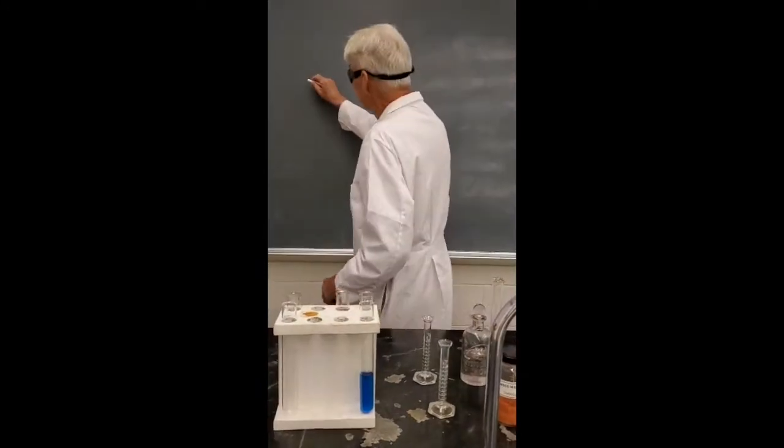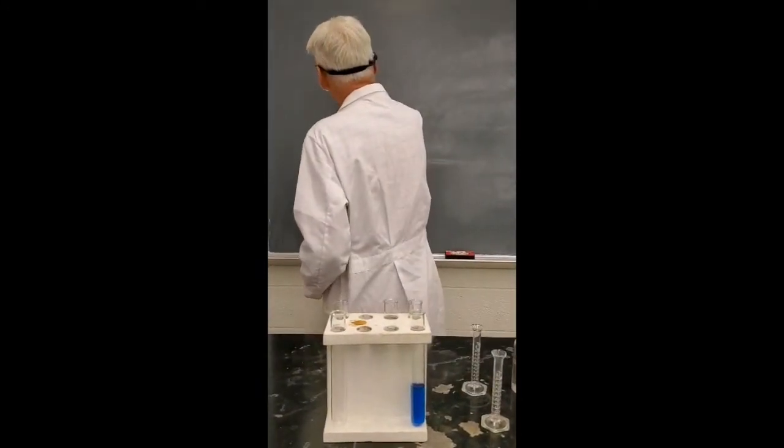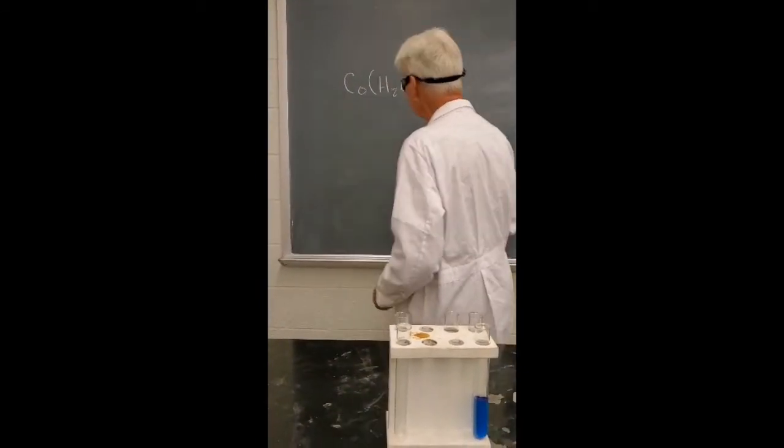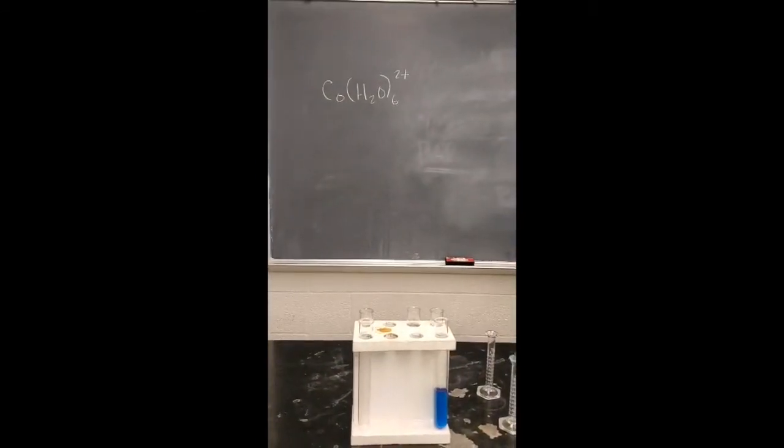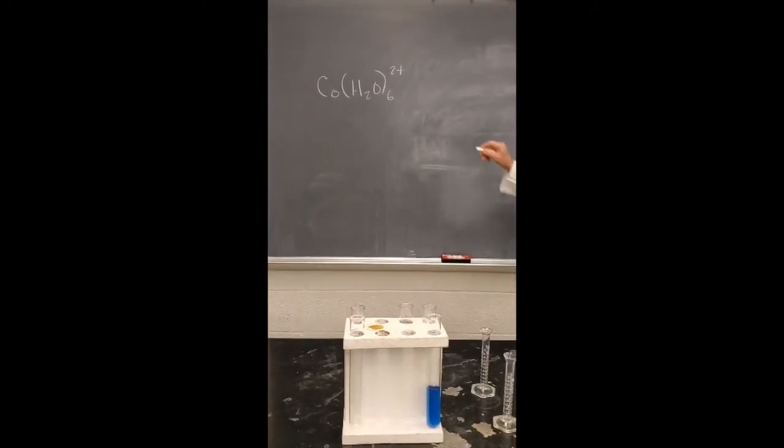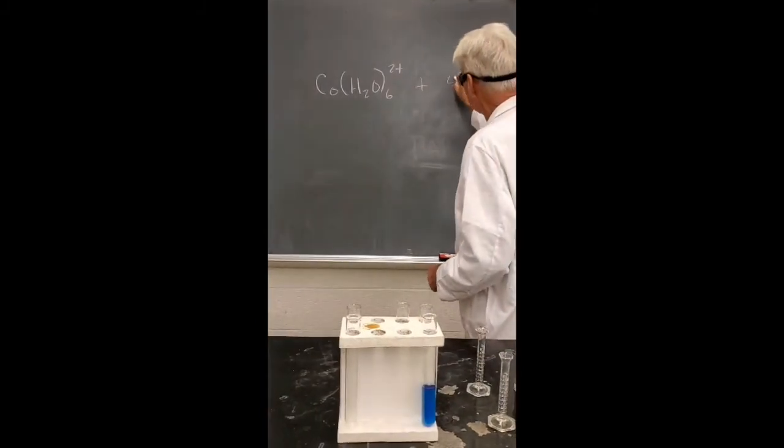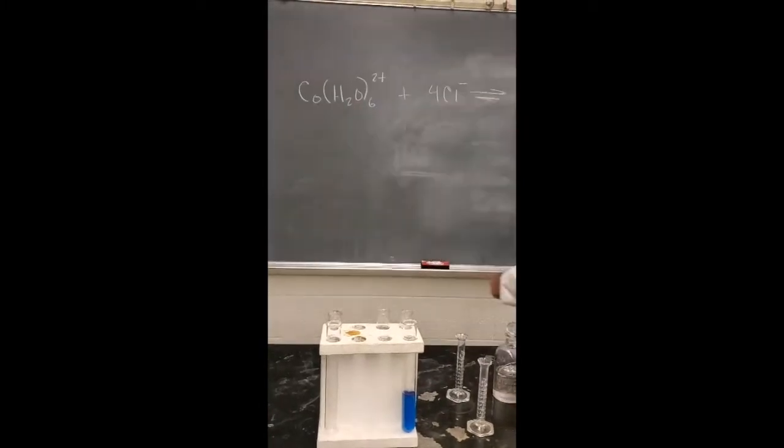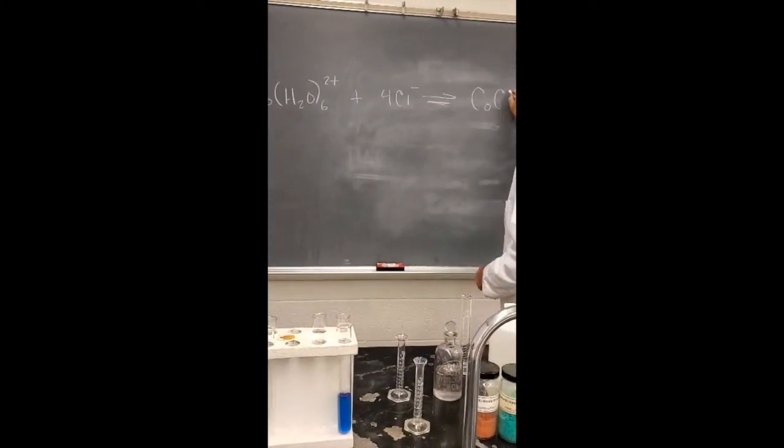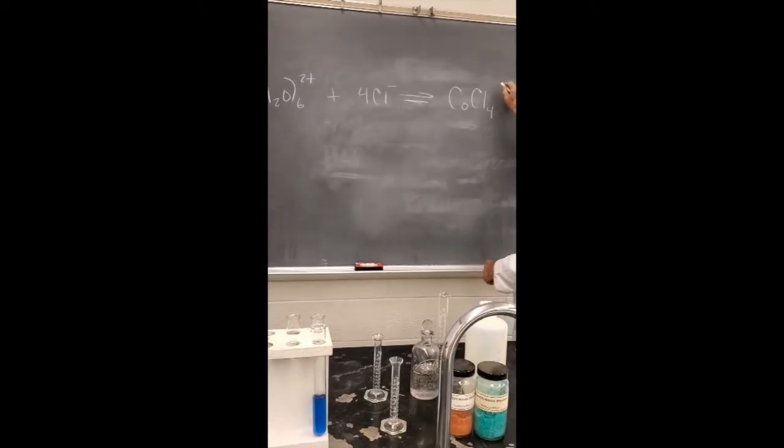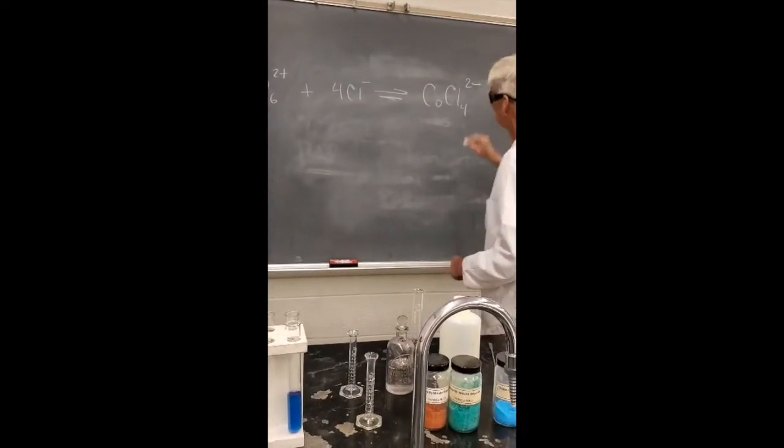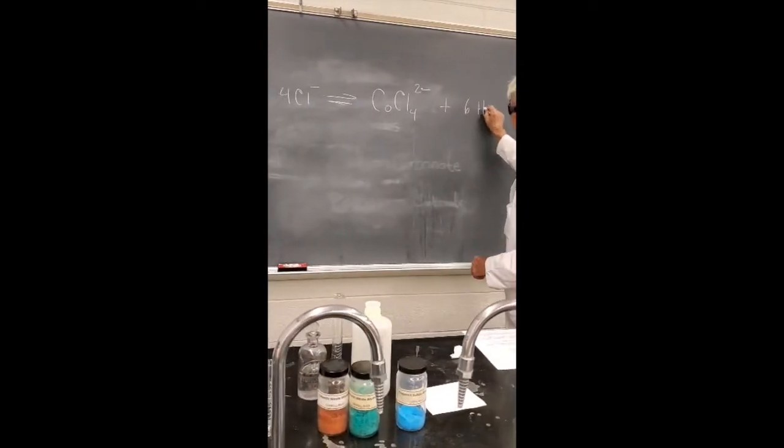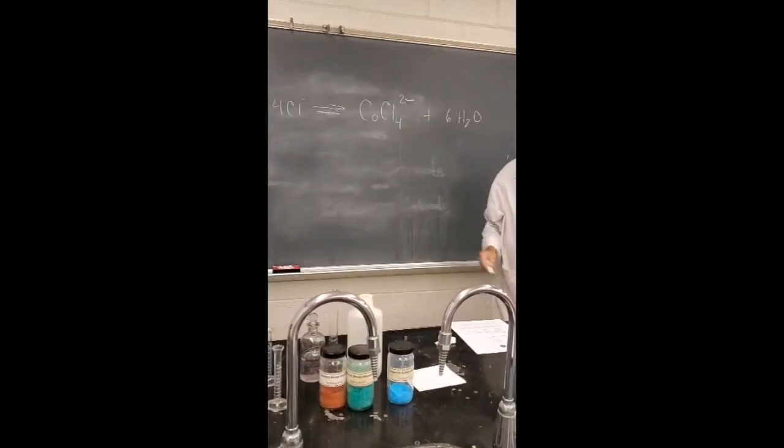So this is what we had before. That's the formula of the octahedral cobalt complex that was a pink color. And you added the chloride ions from the hydrochloric acid. It reacted to make the tetrachloro cobaltate 2 ion. And then you liberated the water molecules. And this is an equilibrium established.